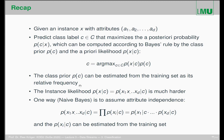The class prior can be estimated from the training set by taking the relative frequencies of each class. The instance likelihoods are much harder since observations are typically multi-dimensional (d-dimensional). One efficient way to handle this is to apply the attribute independence assumption used in Naive Bayes — we assume each attribute is independent of the others, so we can simply multiply the individual feature-wise likelihoods to get the accumulated instance likelihood.